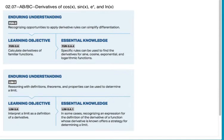This is AP, AB, and BC Calc. We are doing Unit 2, Section 7, which is derivatives of cosine, sine, e to the x, and natural log of x. I'm also going to throw in a to the x just for fun. So let's go ahead and learn some differentiation rules.